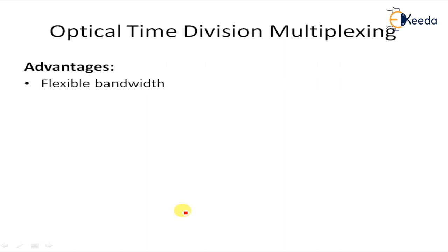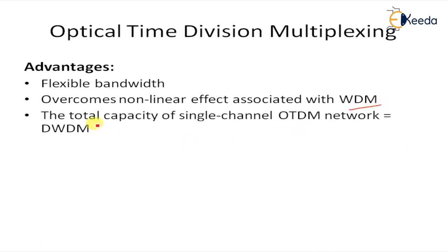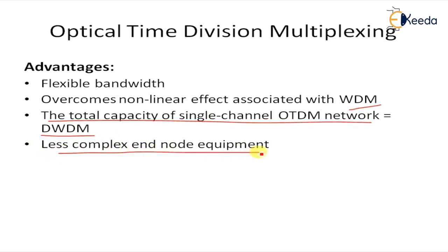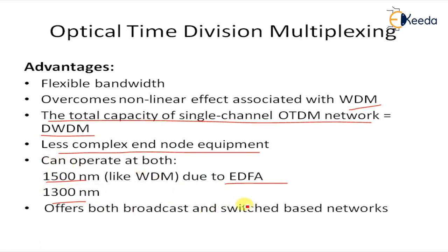Advantages of OTDM: First, it is flexible, providing flexible bandwidth and overcoming nonlinear effects associated with wavelength division multiplexing. The total capacity of a single-channel OTDM network is equal to that of DWDM (dense wavelength division multiplexing), providing very high capacity. Less complex end-node equipment, making it better for the receiver side. It can operate at both 1500 nm — like WDM using EDFA amplifiers — and at 1300 nm. It also supports both broadcast and switch-based networks.